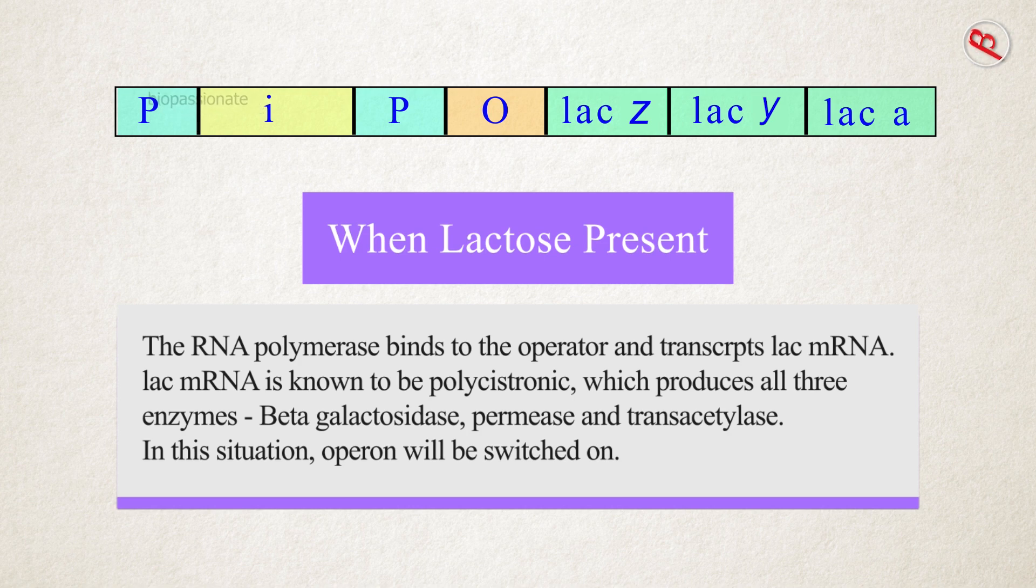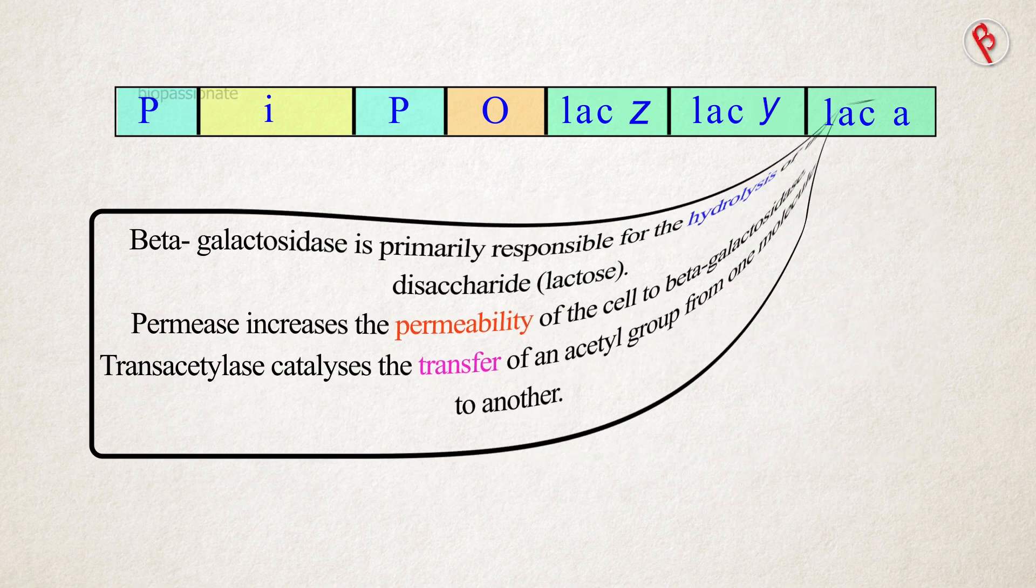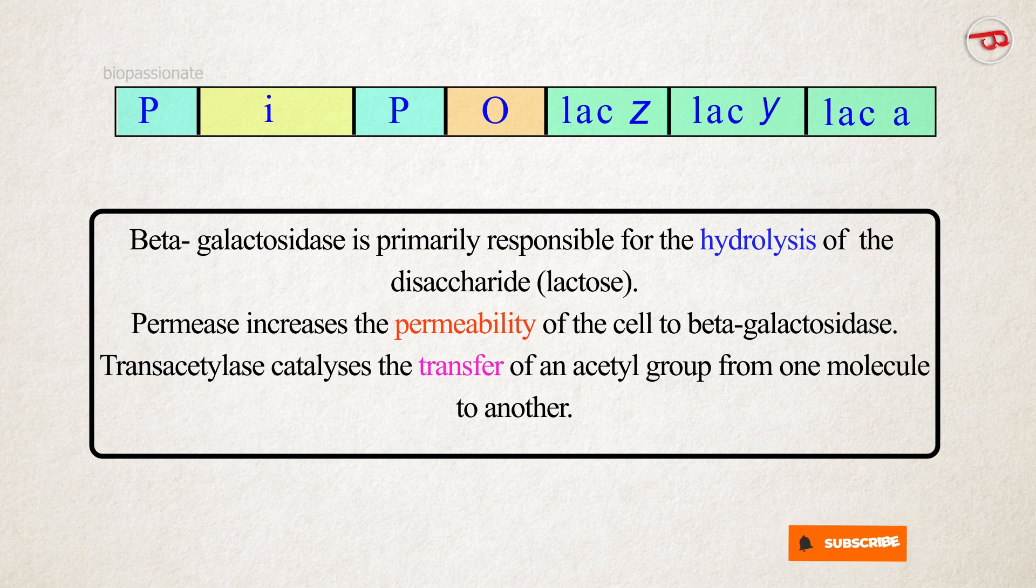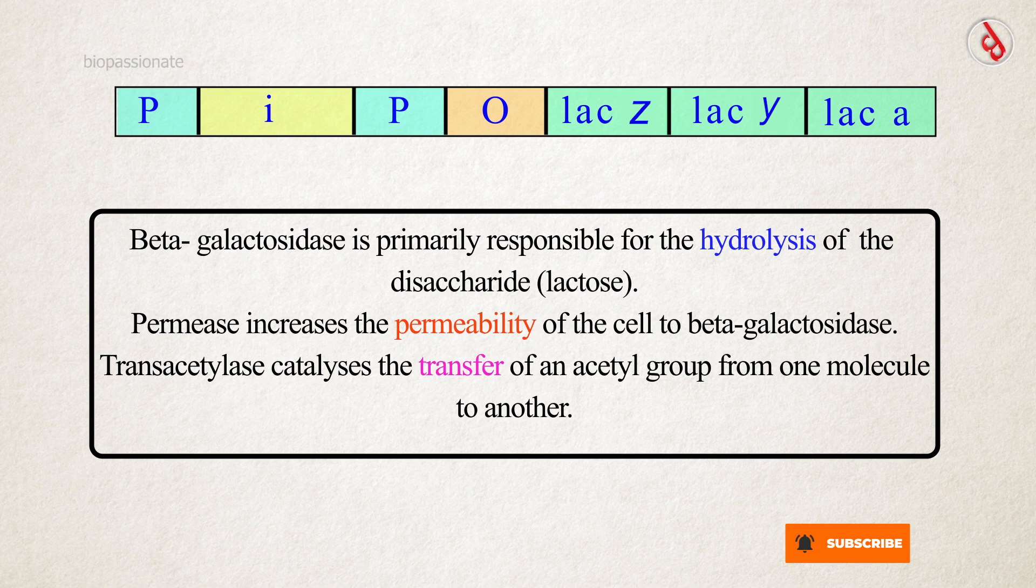The enzyme beta-galactosidase is primarily responsible for the hydrolysis of the disaccharide lactose. The enzyme permease increases the permeability of the cell to beta-galactosidase. Enzyme transacetylase catalyzes the transfer of an acetyl group from one molecule to another.